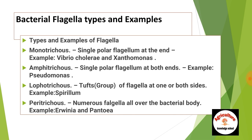Bacterial flagella types and examples: Monotrichous — single polar flagellum at one end; example: Vibrio cholerae and Xanthomonas. Amphitrichous — single polar flagellum at both ends; example: Pseudomonas. Lophotrichous — tufts or group of flagella at one or both sides; found in Spirillum. Peritrichous — numerous flagella all over the bacterial body; example: Erwinia and Pantoia.